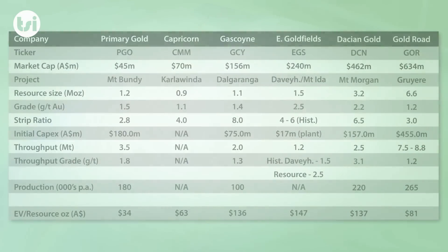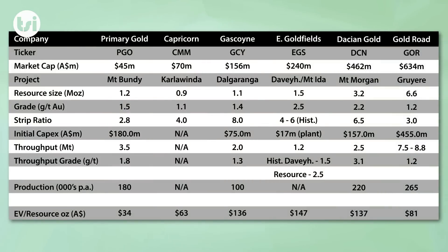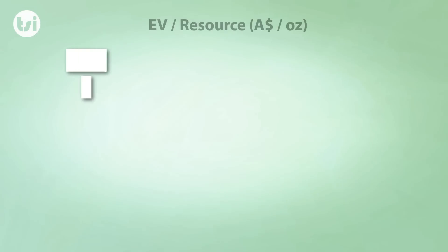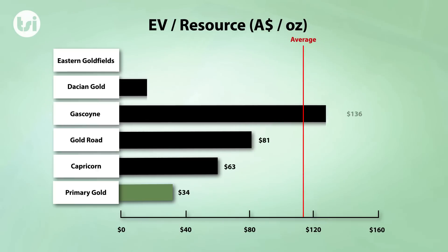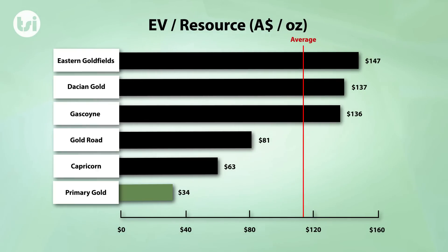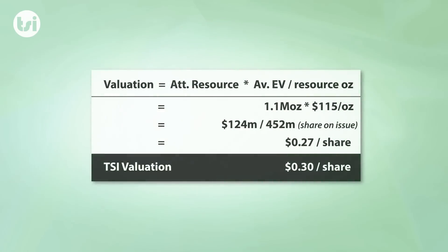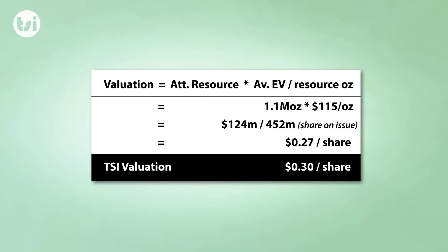And finally, the table highlights Primary's peer group of Australian-based large tonnage gold development companies. Our investment analysis video provides a more detailed examination of the similarities and differences between Primary and their peer group. One key aspect that we do note is that the average valuation per resource ounce of the group was $115 per ounce, which is a significant premium to Primary's current valuation. If the average valuation was applied to Primary's attributable resource, their valuation would be $0.27 per share, which supports our current valuation target of $0.30 per share.